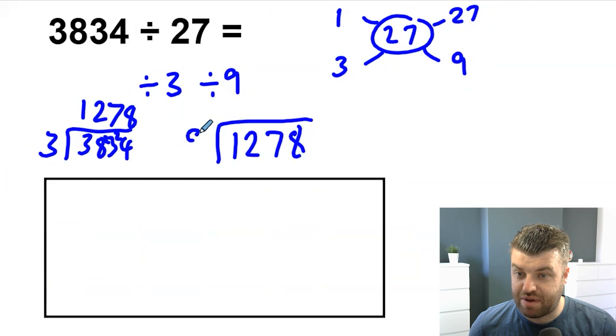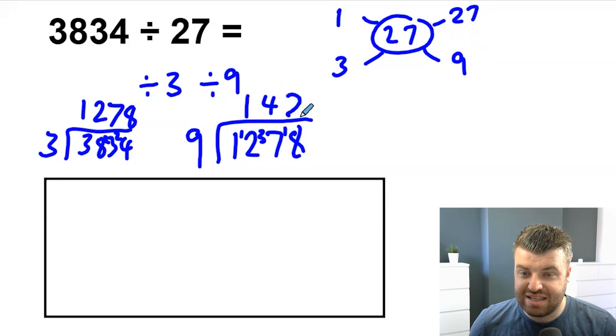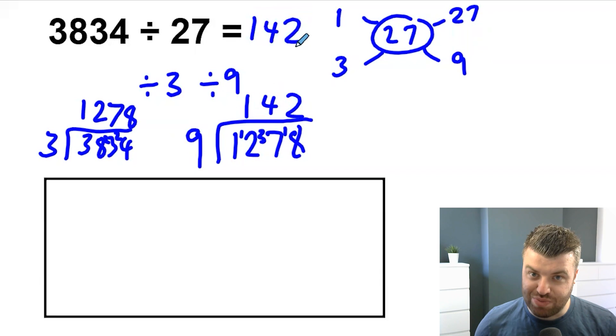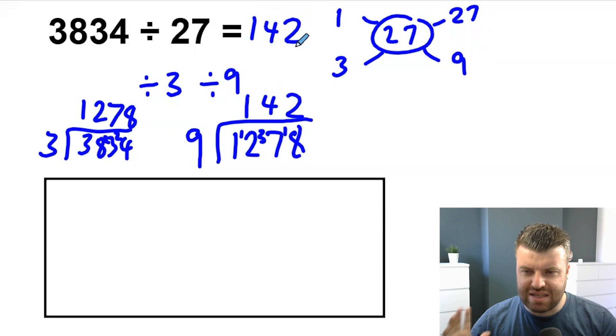9s into 1 don't go. 9s into 12 is once with 3 remaining. 9s into 37 is 4 times. That's 36 with 1 left over. 9s into 18 is 2. We have the answer super quickly. That's why it's important in our times tables. We can make these questions 10 times easier.